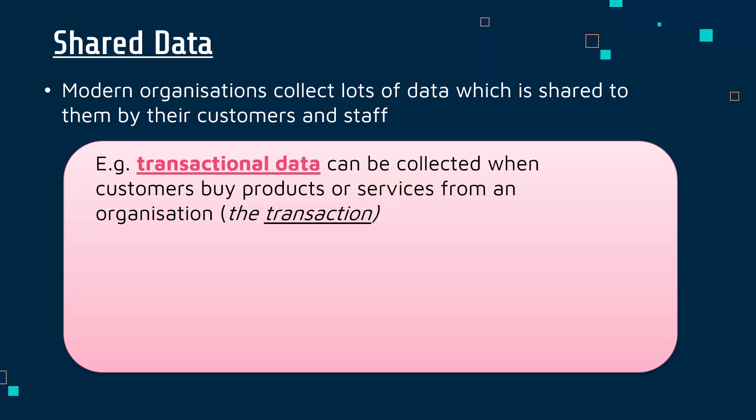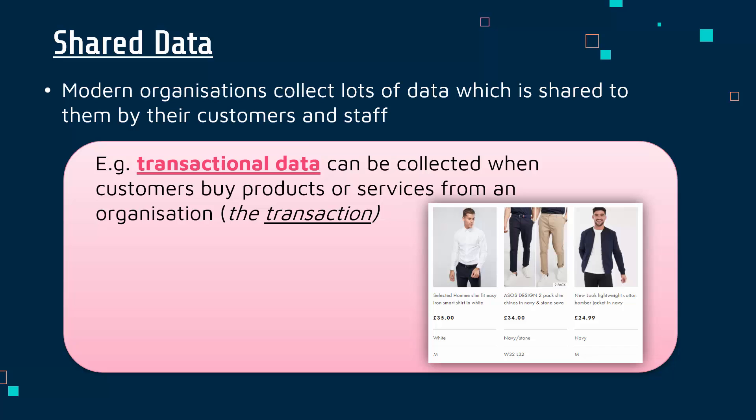Transactional data is data collected from somebody buying something — that is what the transaction is. So you might buy some clothes online. This is genuinely a screenshot of my own order history, so you can judge my very exciting outfit. This order was from about a year ago, and ASOS, who I have an account with, have held onto this transaction data for over a year at this point. Because that data is useful for me, they would argue — I can go back and check what I paid, check what I ordered — but also useful for them.